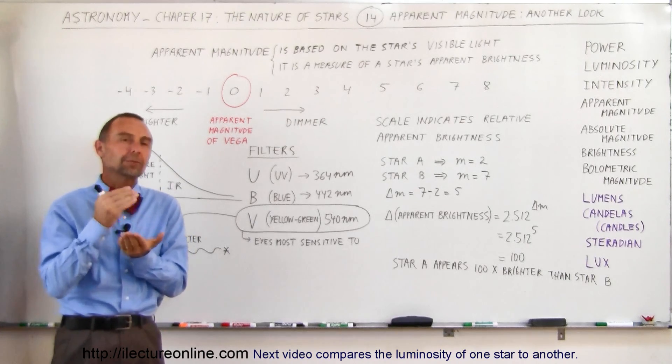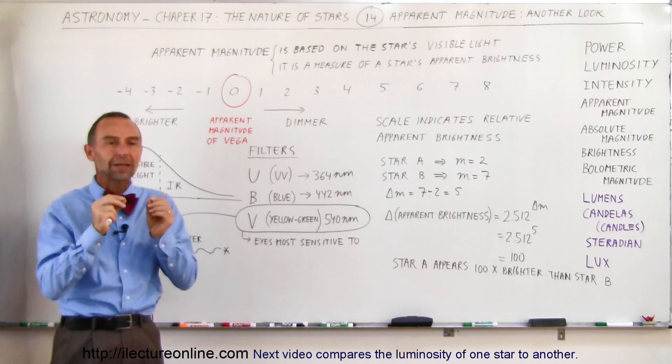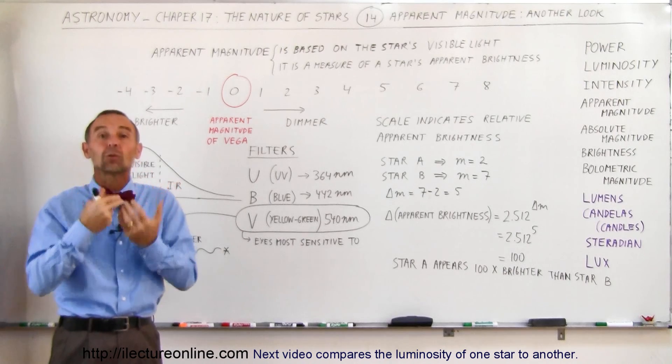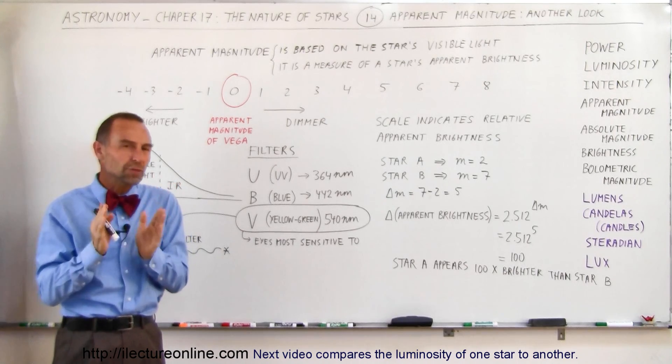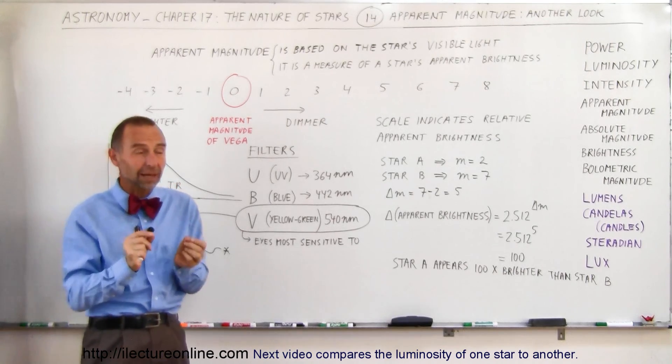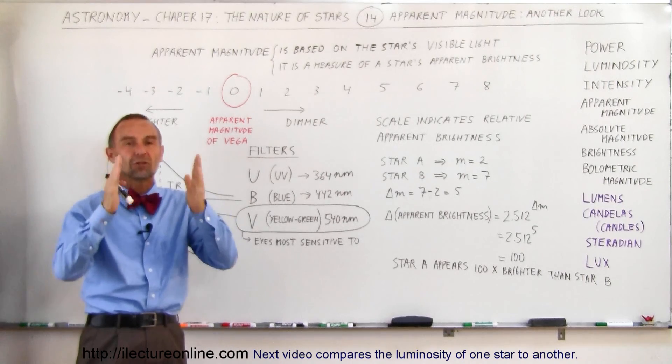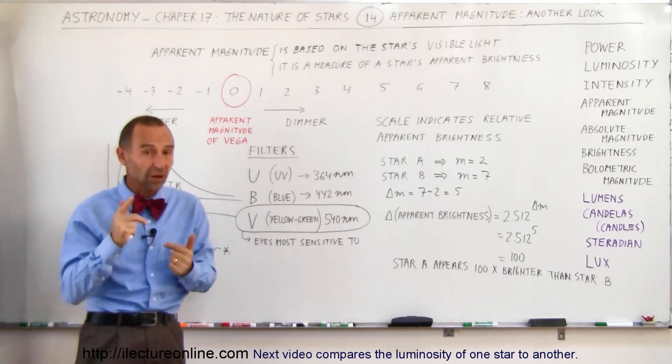And when we talk about apparent brightness, we're really talking about how bright stars appear to the visual eye, to the eye of a person. Since people can only see visible light, it's based upon the visual portion of the light that comes to us from these stars.